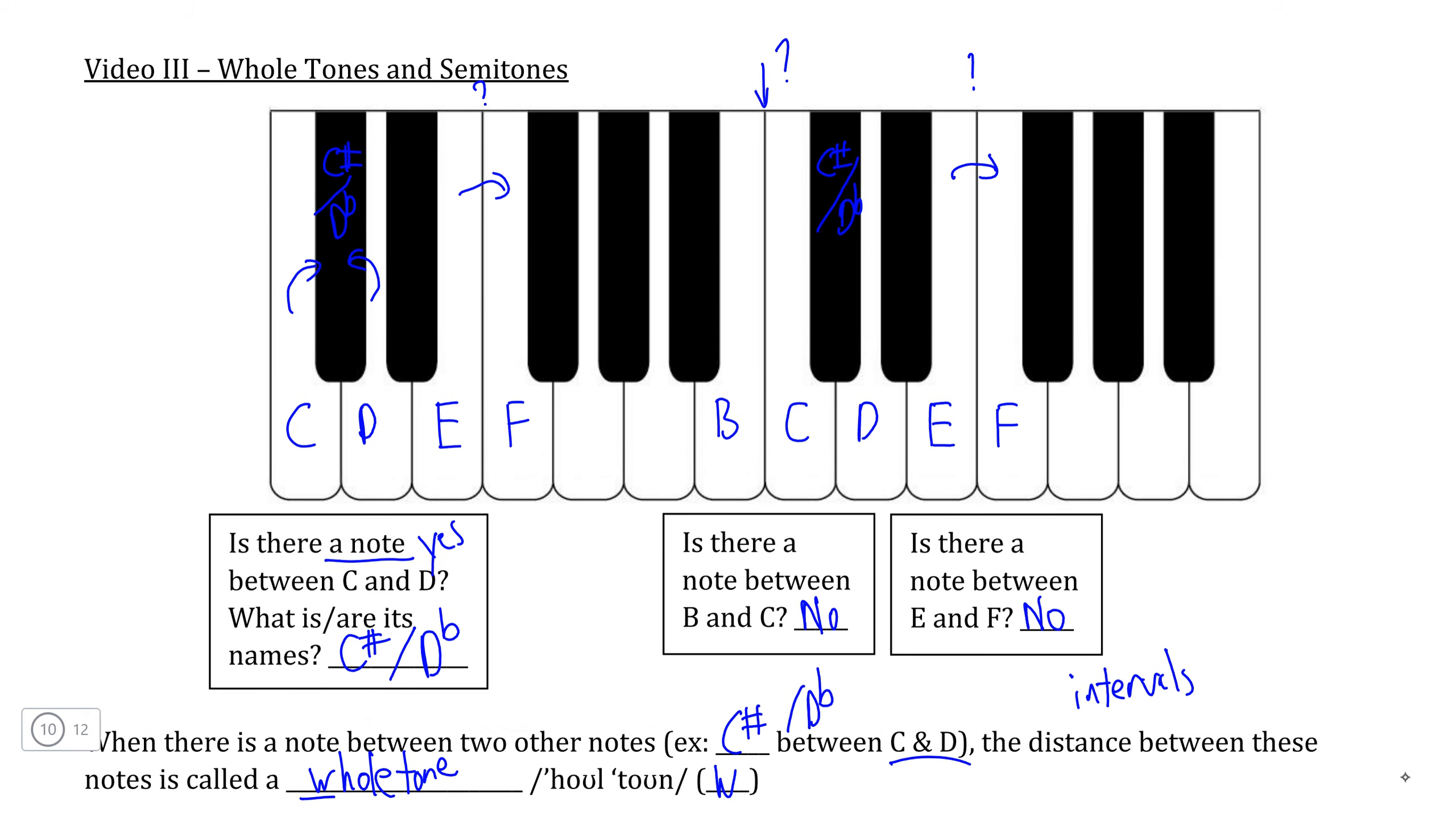So for example, if we wanted to locate two other whole tones and semitones, or rather one of each, if we take a look between F and G and ask, is there another pitch in between F and G? Well, obviously there is this black key in the middle here, which we can call F sharp or G flat, and therefore the distance between F and G we would call a whole tone.